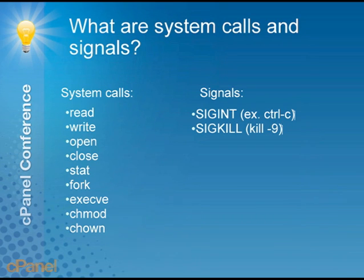Those are all system calls — calls to the operating system to do something for the program. Signals include SIGINT, otherwise known as Ctrl-C, and SIGKILL, otherwise known as kill -9. There are other ones as well, but those are the main ones you'll run across.